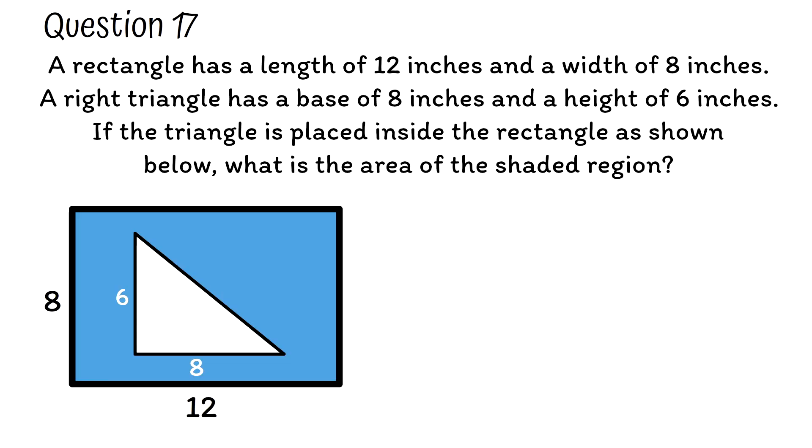Question 17. A rectangle has a length of 12 inches and a width of 8 inches. A right triangle has a base of 8 inches and a height of 6 inches. If the triangle is placed inside the rectangle as shown below, what is the area of the shaded region? To know the area of the shaded region, we have to first know the area of the rectangle and also the area of the triangle.